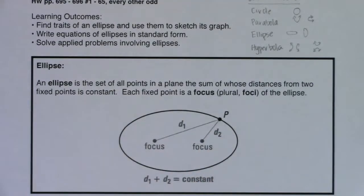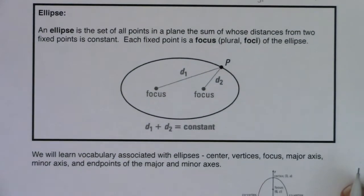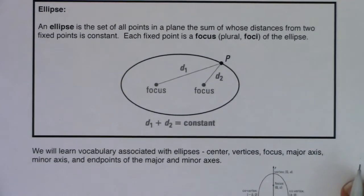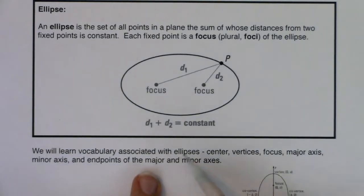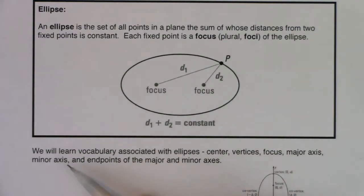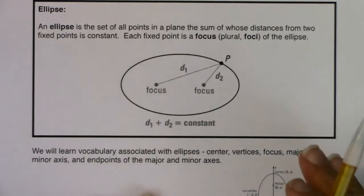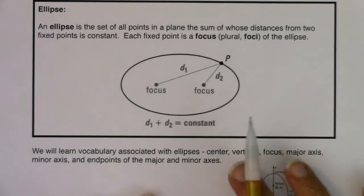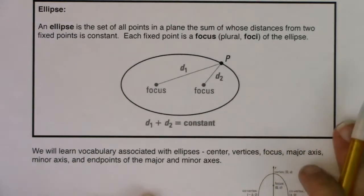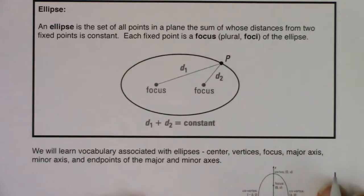In this section, you're going to learn about vocabulary associated with ellipses: center, vertices, focus, the major axis, the minor axis, and the endpoints of the major and minor axes. Some of these vocabulary terms pop up in circles, parabolas, hyperbolas, and ellipses — they pop up in the conic sections. Not every vocab term applies to every conic section; these are the ones specific to the ellipse.